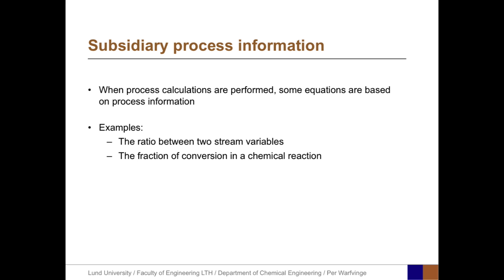Subsidiary process information is some information that is given about the system that we can use in our calculations. So when process calculations are performed, some equations are based on this information. Examples: The ratio between two stream variables, or the fraction of conversion in a chemical reaction.